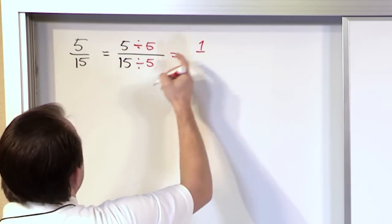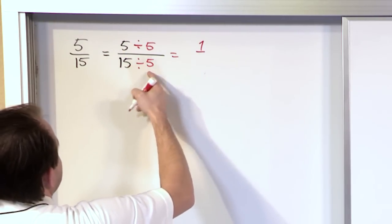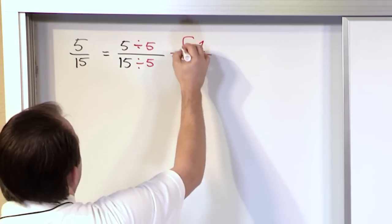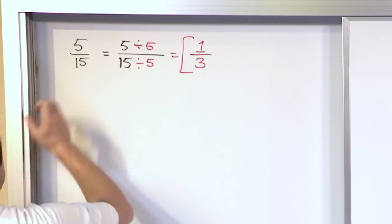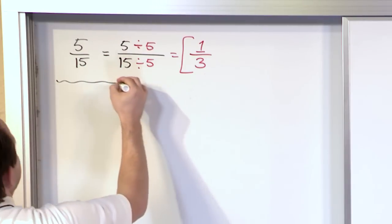5 divided by 5 is 1. 15 divided by 5 is 3. So 1 third would be the final answer there. And if we were to draw both of these pictures we would see that they're both equivalent.